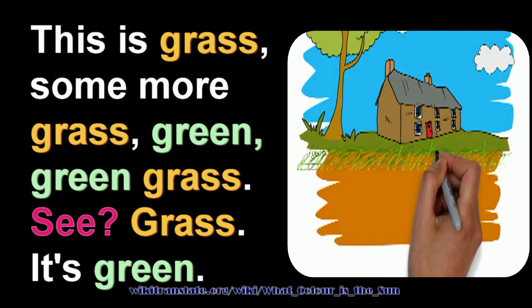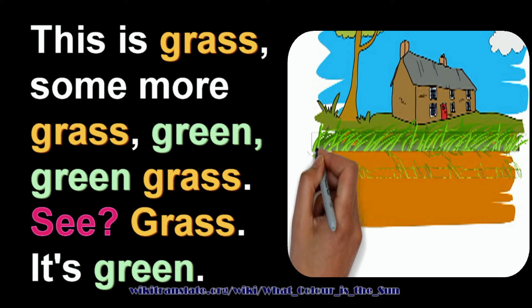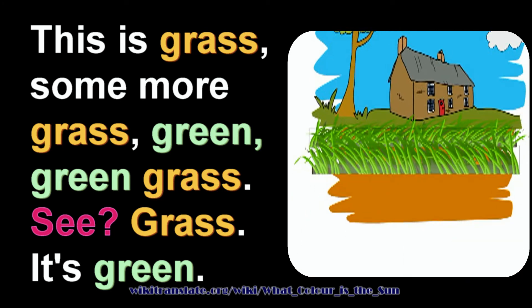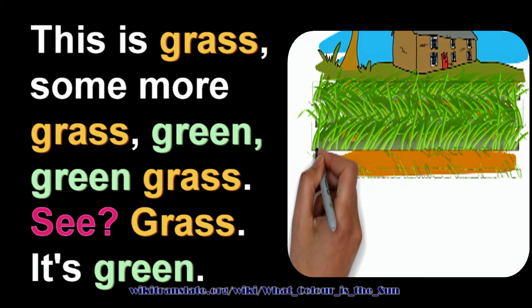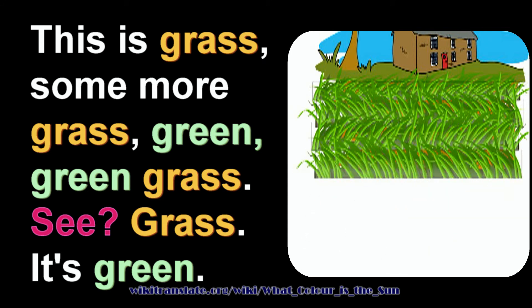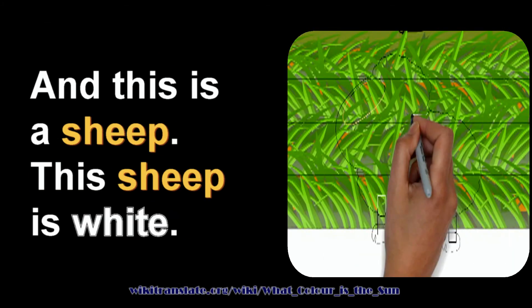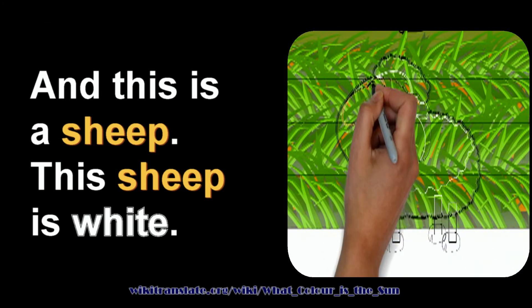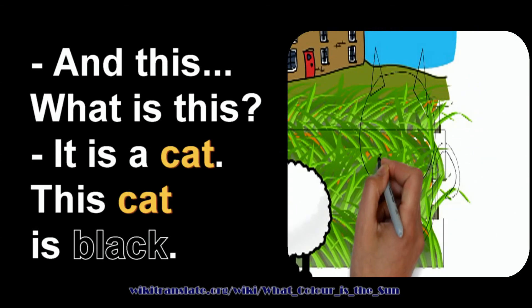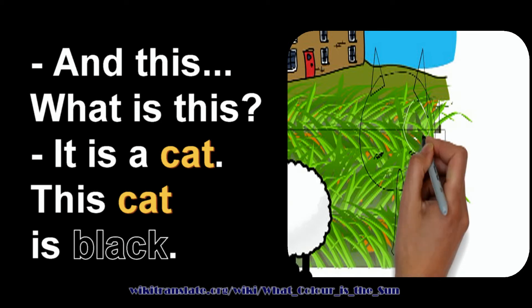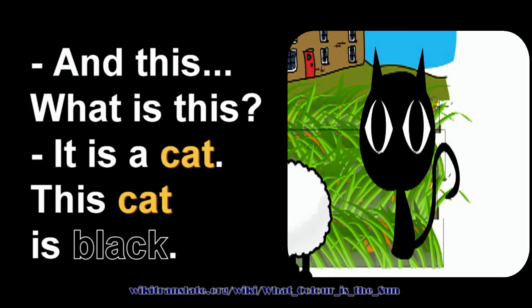This is grass — green grass. It's green. And this is a sheep. This sheep is white. And this — it is a cat. This cat is black.